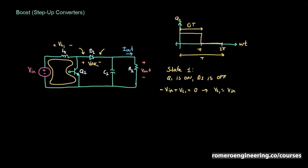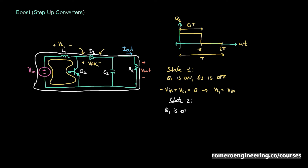During State 2, we're switching Q1 off. The energy stored in inductor L1 needs to flow somewhere, so it flows through the freewheeling diode D1 — the stored energy forces D1 on. The circuit during State 2 looks like this: Vin through L1 through D1 through the output load and back to Vin. So Q1 is off and D1 is on. The voltage loop equation becomes: minus Vin plus VL1 plus Vout equals zero, since D1 is a short circuit.